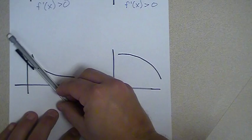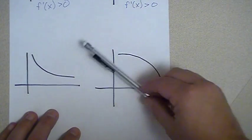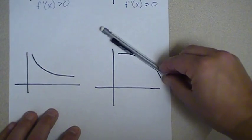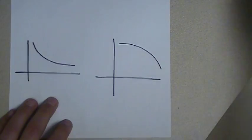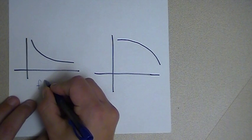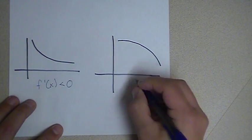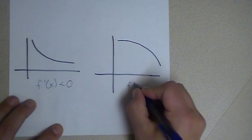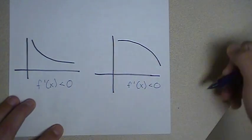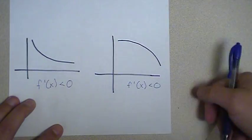Looking at the bottom two graphs, the slope of the tangent line anywhere you look on this graph is always going to end up being negative. Slope of the tangent line anywhere you look on this graph is always going to end up being negative. So these two graphs would both have negative derivatives for the portions of them that I have sketched — f prime of x is less than zero — simply because the slope of the tangent line is always less than zero on these two graphs.